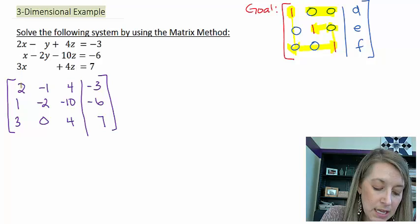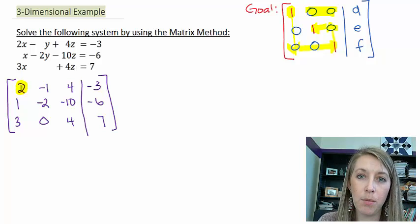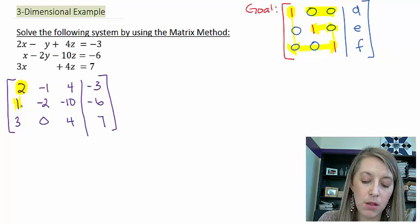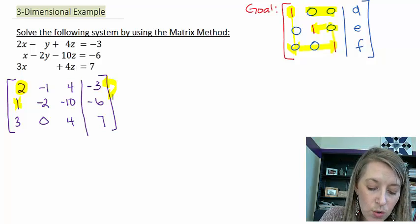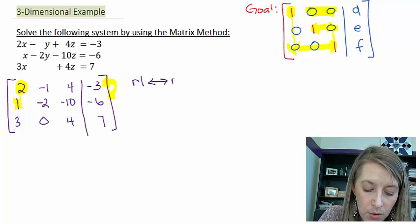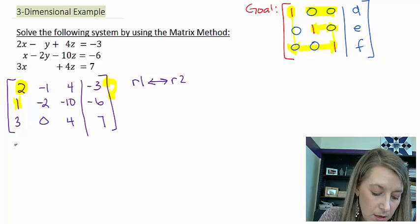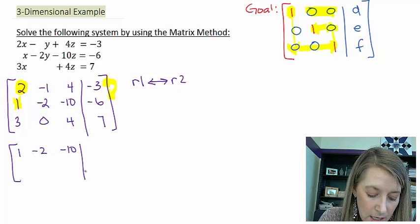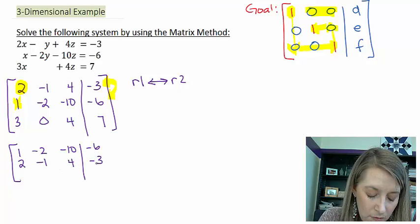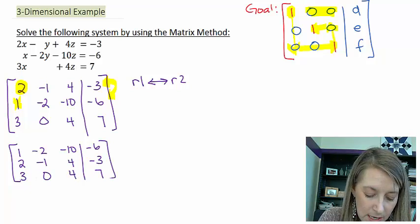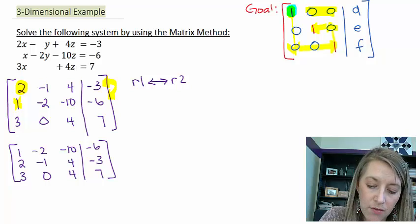I need to get a 1 in the top left, and the easiest way I see is that I have a 1 right below it. So I'm going to interchange row 1 and row 2. That gives me: 1, -2, -10, -6 as the new row 1; 2, -1, 4, -3 as the new row 2; and row 3 stays the same.